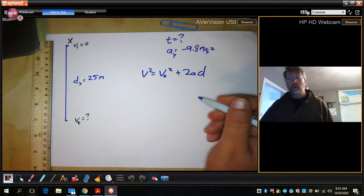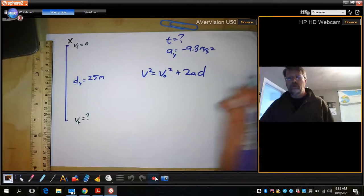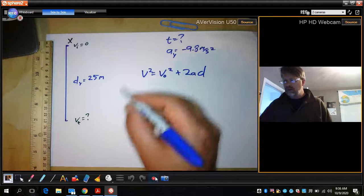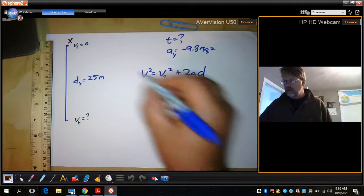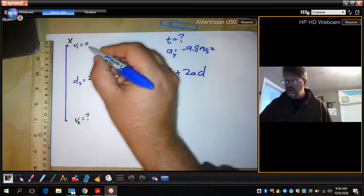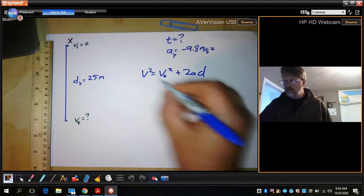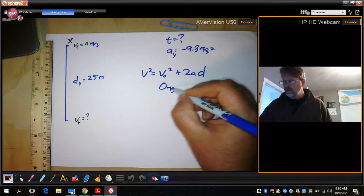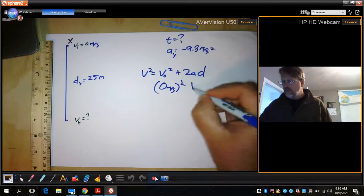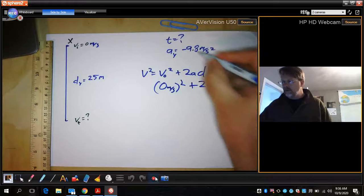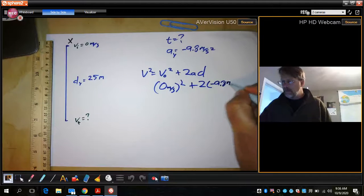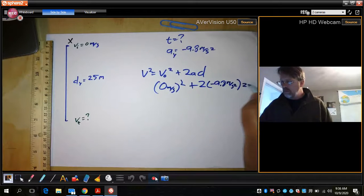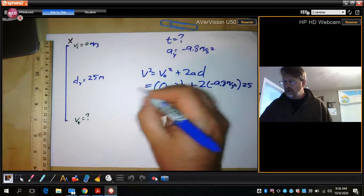So now what we have to do is what some of them refer to as plug and chug here. So we're going to plug in these numbers. So we have zero meters here, or meters per second. So that's going to go here. We have two times a times d. And that's all going to equal v squared.